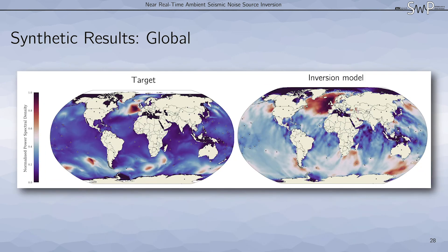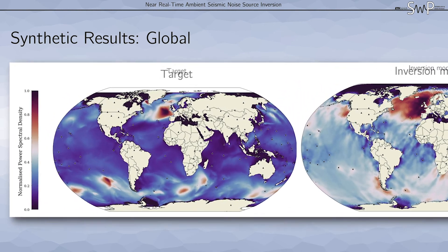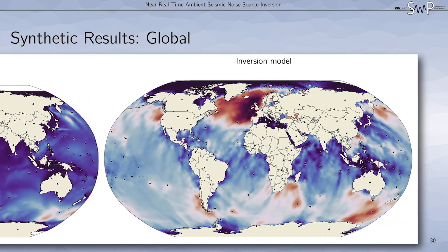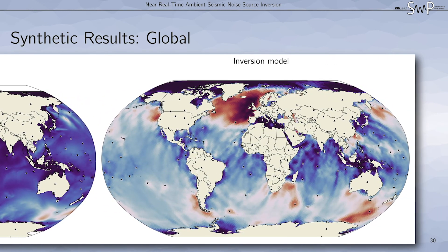Similarly to the synthetic tests in the Northern Atlantic, most of the dominant noise sources are present in the inversion model after 10 iterations. Finally, we applied our inversion scheme to real data.